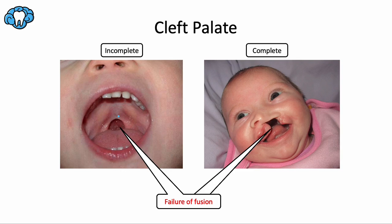An incomplete cleft stops before reaching the primary palate and upper lip area. A complete cleft of the entire palate involves the full length of the primary and secondary palate. Everything anterior to the incisive papilla is considered the primary palate. A complete unilateral cleft palate is the most common manifestation of cleft palate.